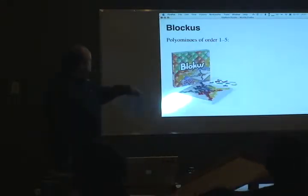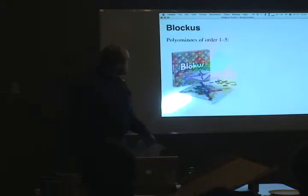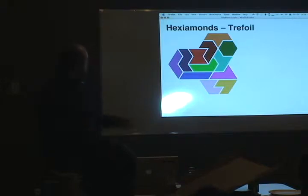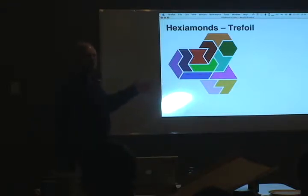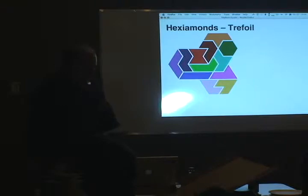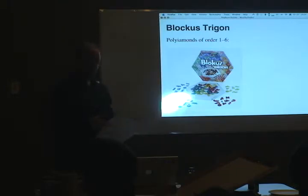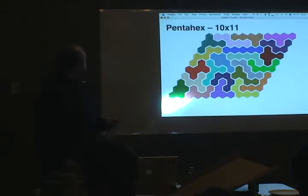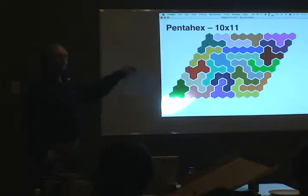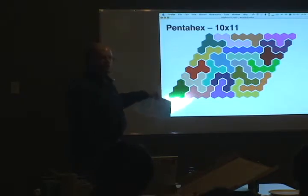If you've ever played the game Blokus, you've played with polyominoes — all the polyominoes of order 1 through 5 are in Blokus. There are lots of other polyforms as well. These are hexiamonds, named after the diamond. The diamond shape is two triangles, so a hexiamond is six triangles — I think there are 12 of these shapes. And if you've ever played Blokus Trigon, you've played with polyiamonds — all polyiamonds of order 1 through 6. These games are a lot of fun.